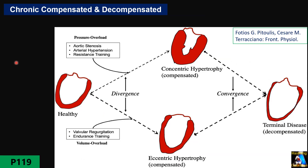In acute MR, if the regurgitation is severe, the patient presents with acute hyperdynamic heart failure and requires invasive, aggressive treatment. Depending on the background and cause of the MR, this is usually surgery — valve replacement, repair, bypass, and so on.